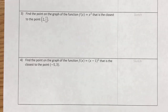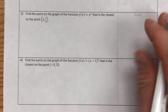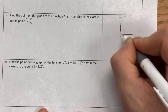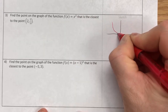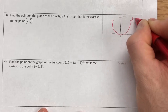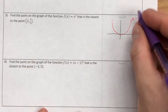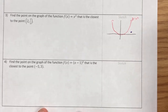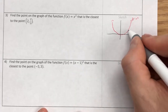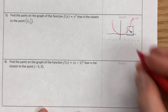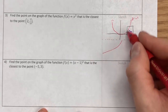The next problem: find the point on the graph of f(x) = x² that is closest to the point (2, 1/2). The graph is an upward-opening parabola — the parent quadratic y = x². Plugging x = 2 in gives 4, so the point (2, 1/2) lies below the curve. We want to find which point on that curve is the smallest distance away.